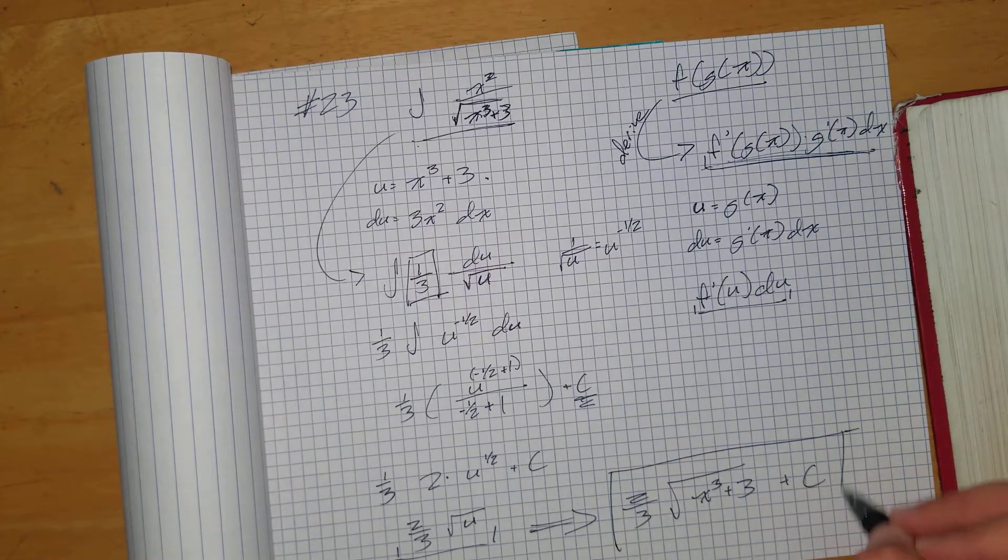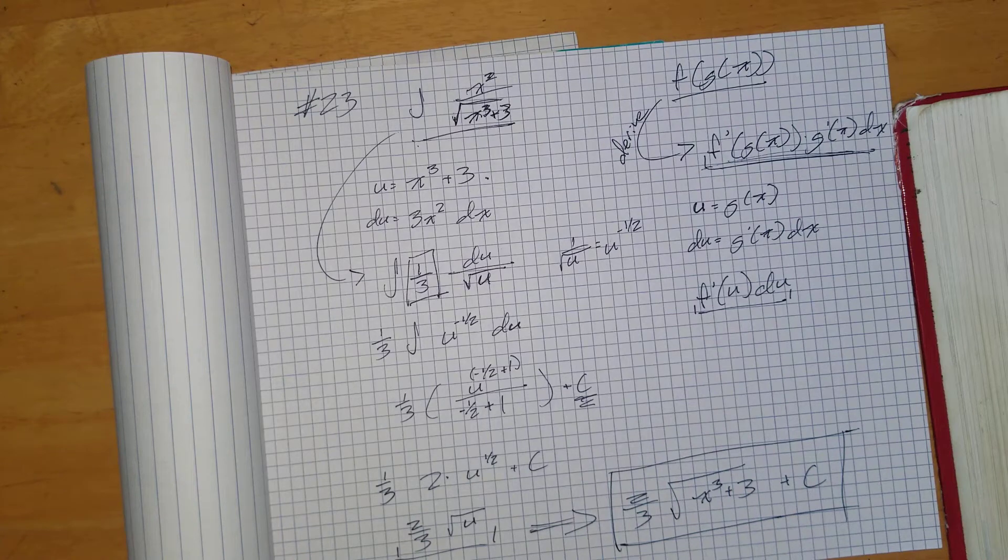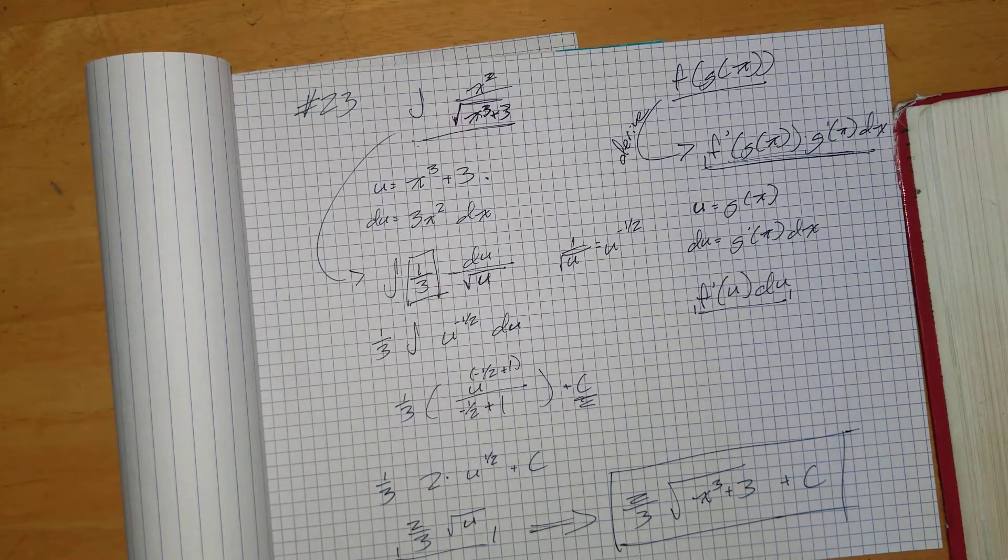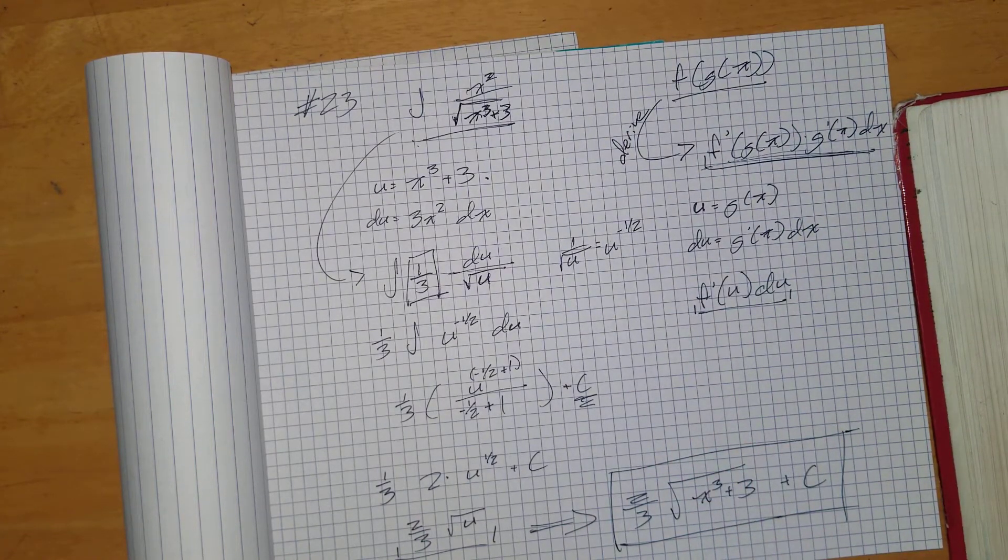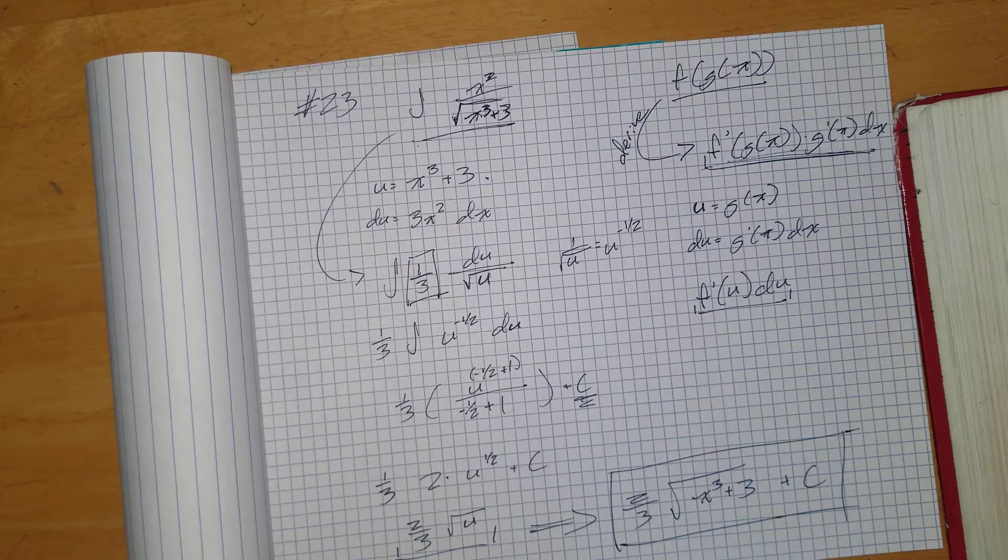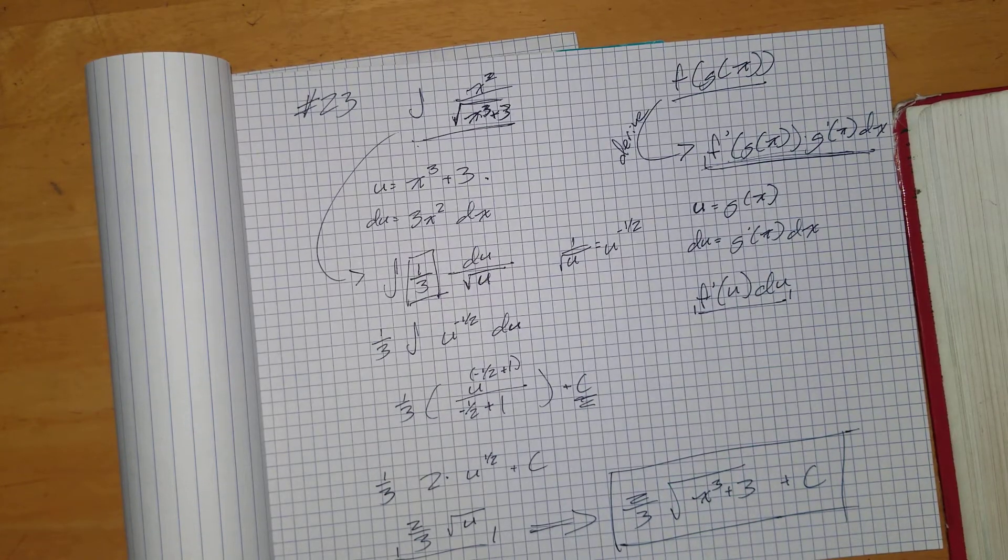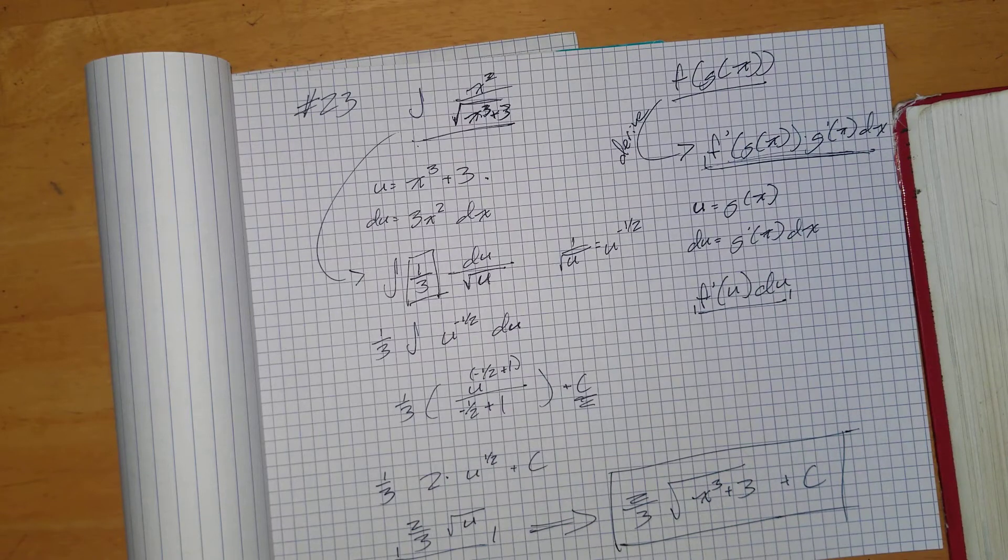So there you go. That is how you do number 23. And you'll use the same process for any composite function, which is most of 21 through basically 51.